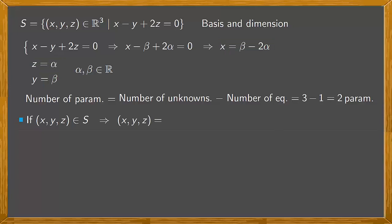Therefore, (x, y, z) equals x which is beta minus 2 alpha, where y is beta and z is alpha.